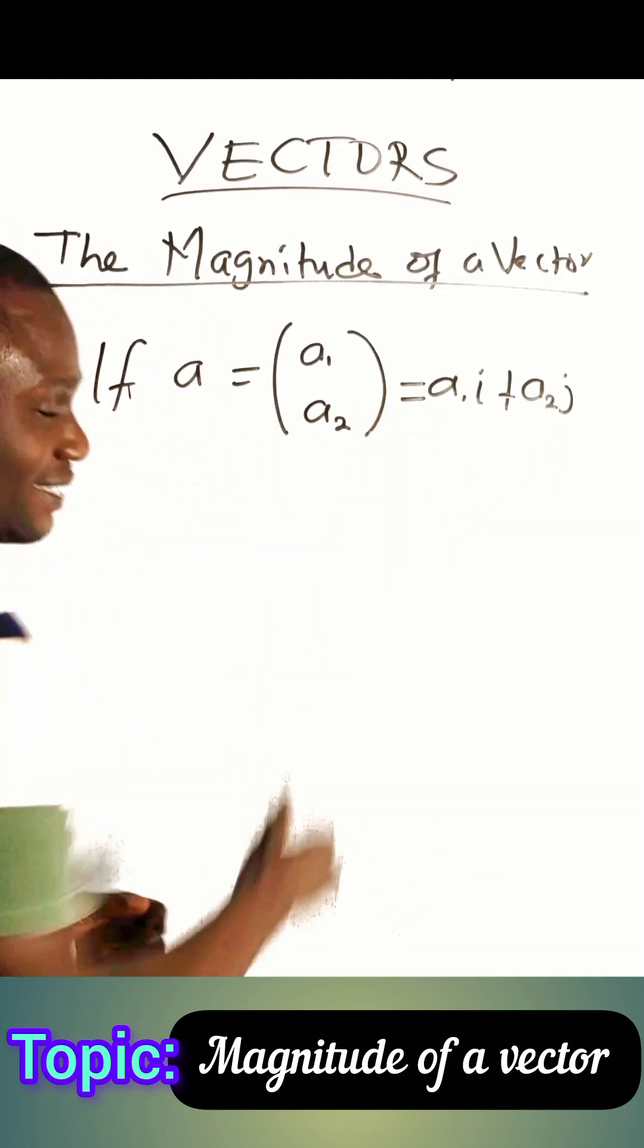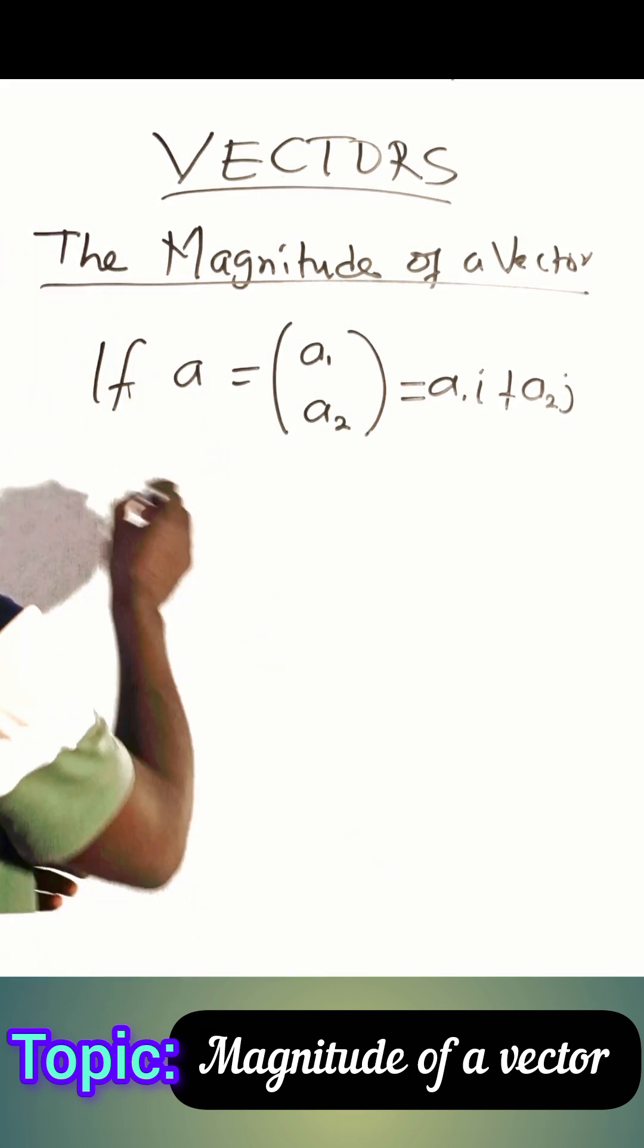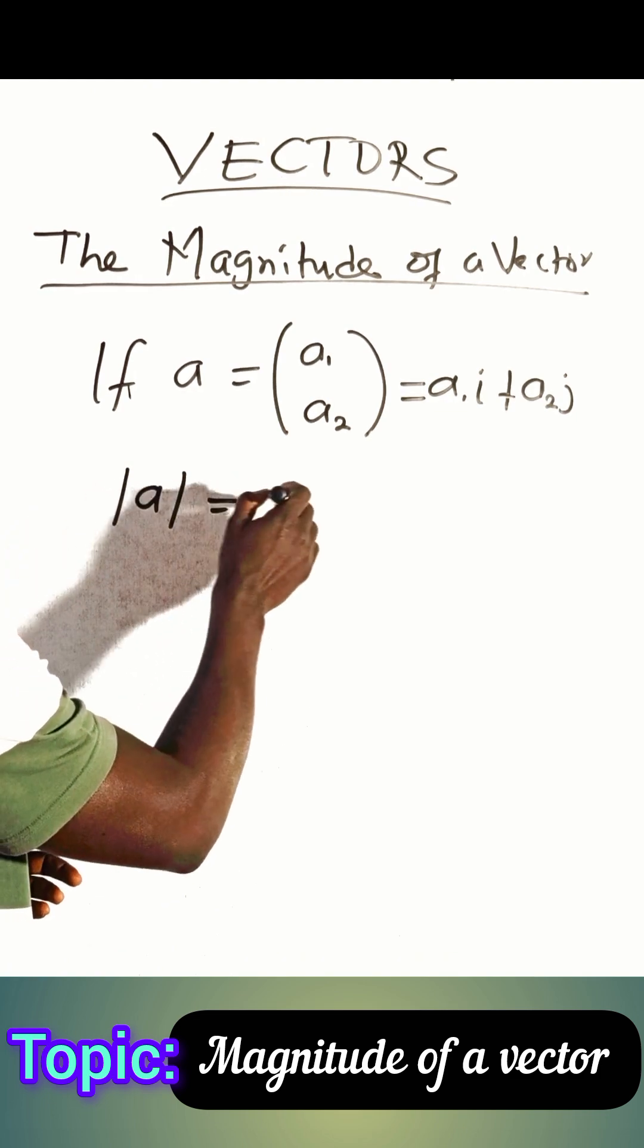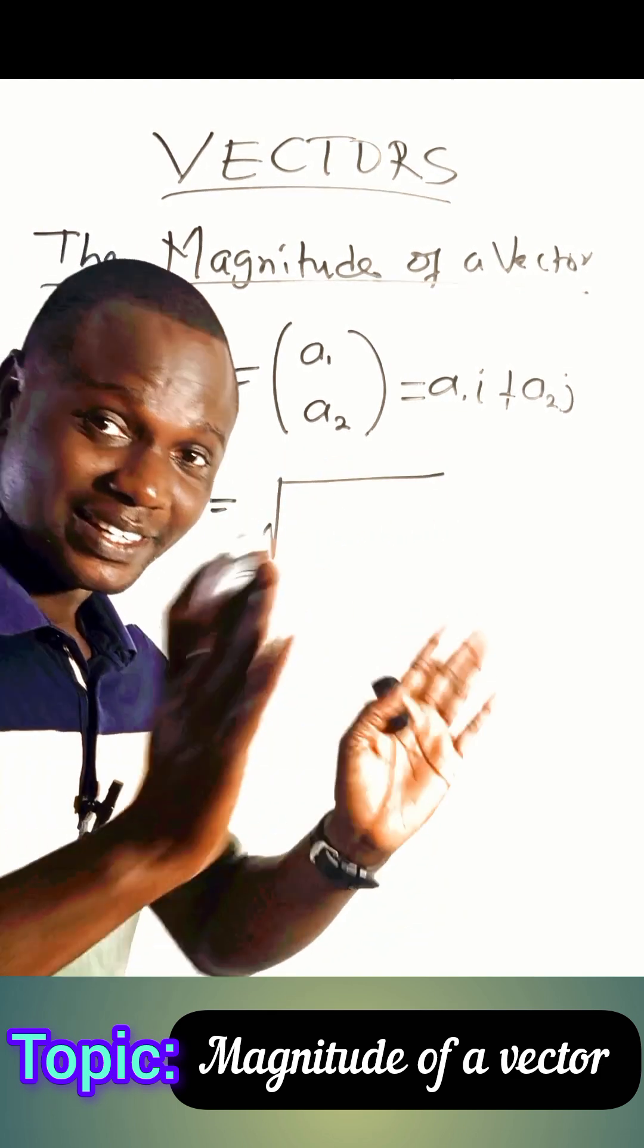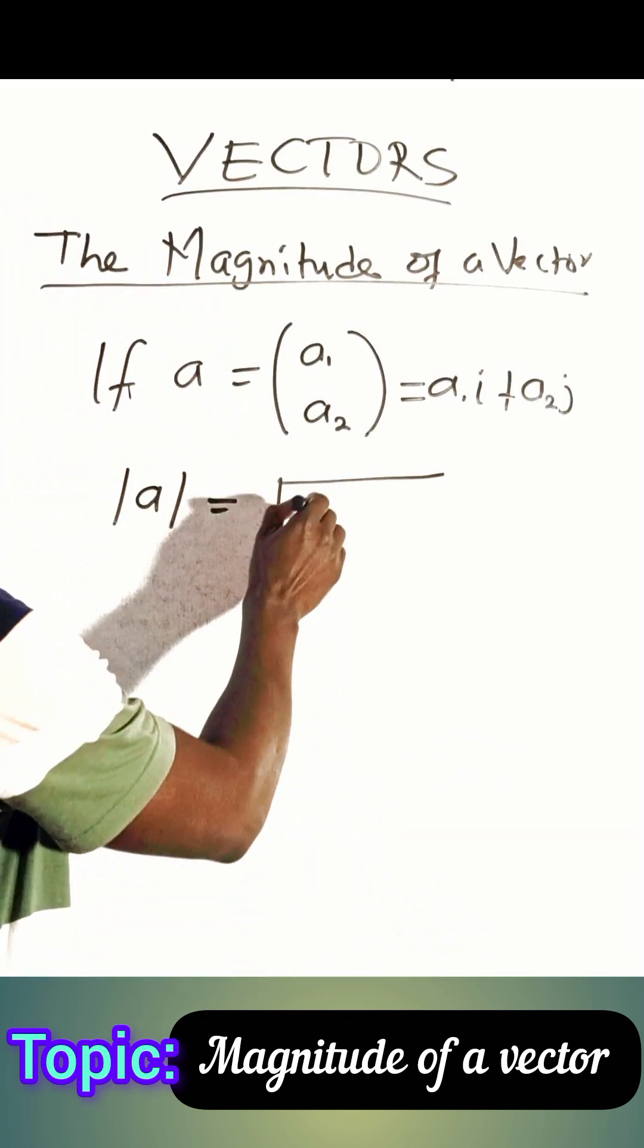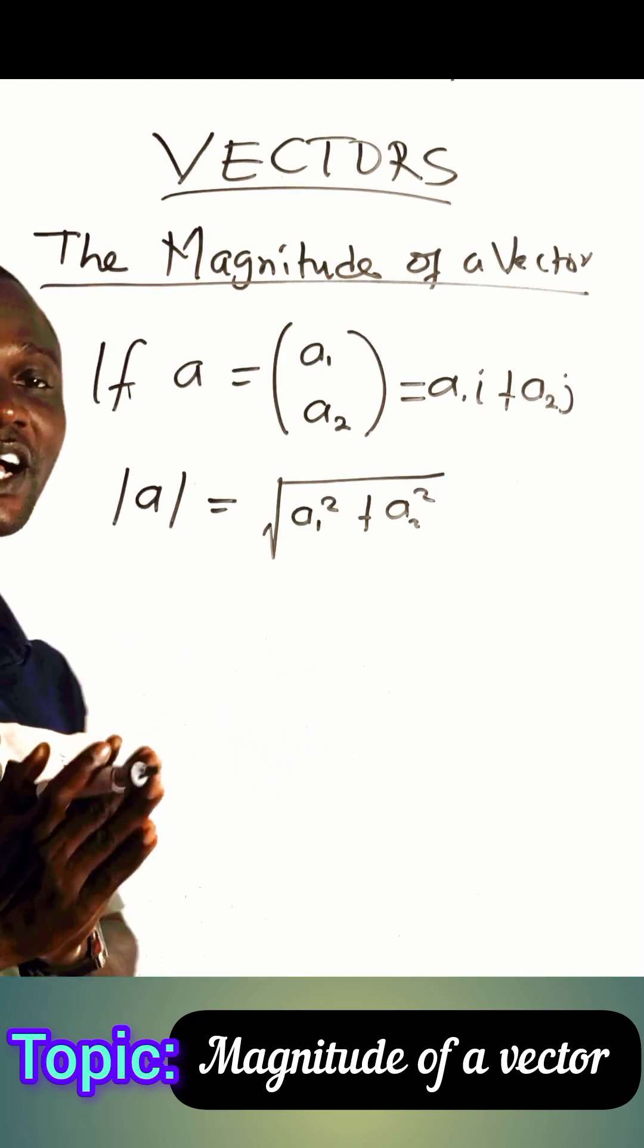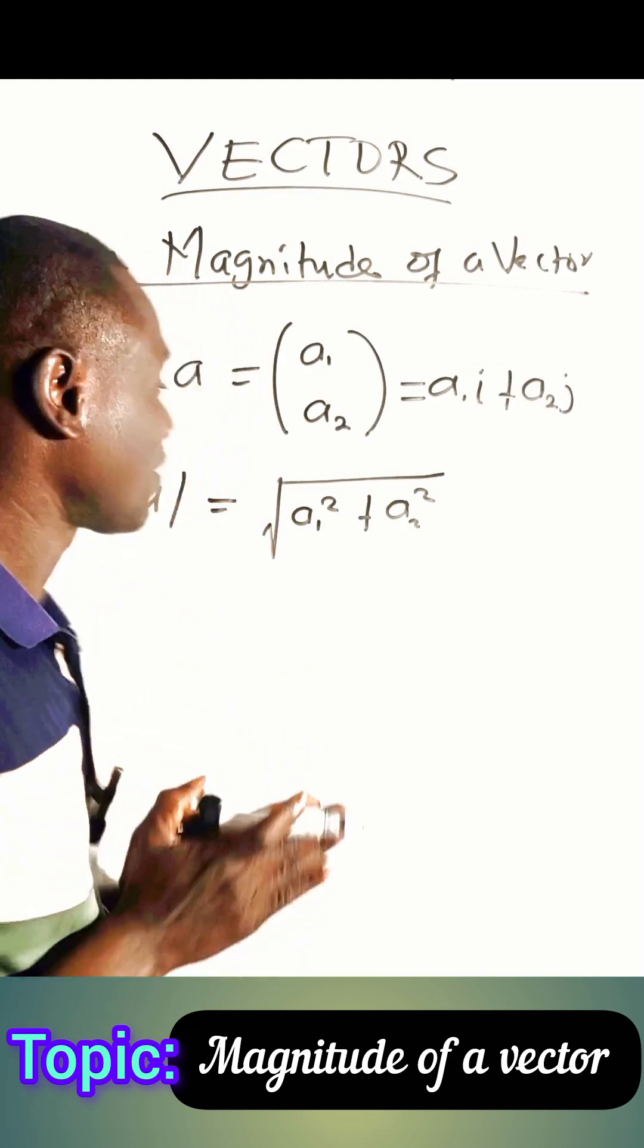Now to find the magnitude, the size of this vector, we say the magnitude will be equal to - we use the Pythagorean rule to find the size of that vector - the square root of a1 squared plus a2 squared. This is how you find the size of the vector.